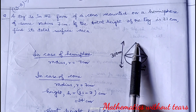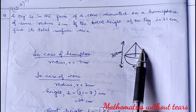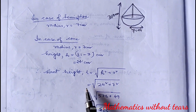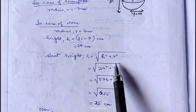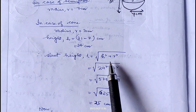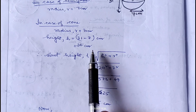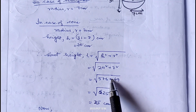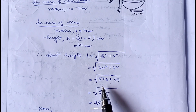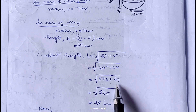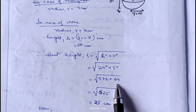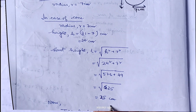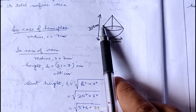The curved surface area of the cone is pi r l. Since slant height l is not given, we have to first calculate it. Slant height l is root over h squared plus r squared. Here h is 24 and radius is 7, so 24 squared plus 7 squared is 576 plus 49, which is root over 625, giving slant height 25 centimeter.